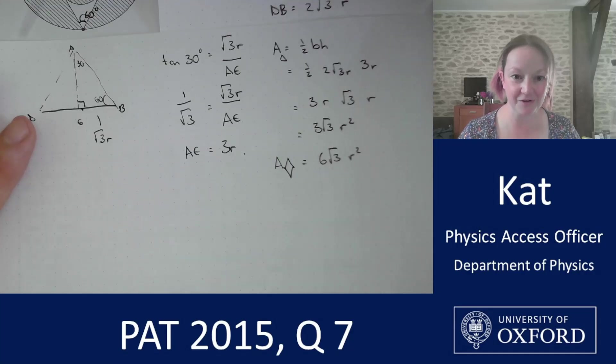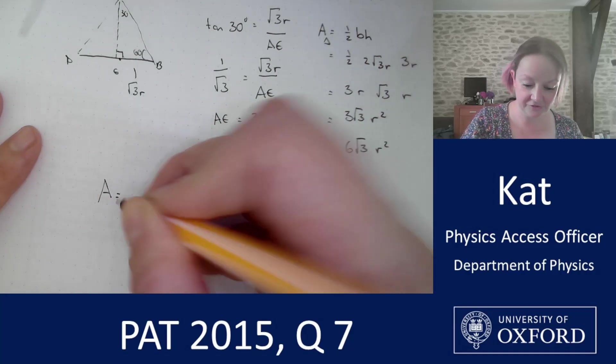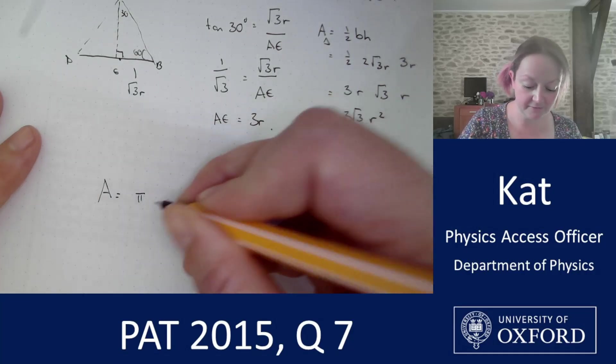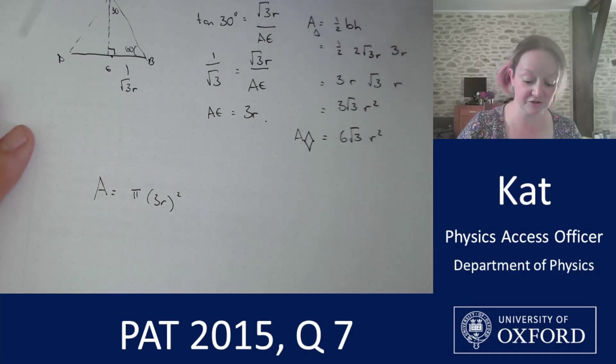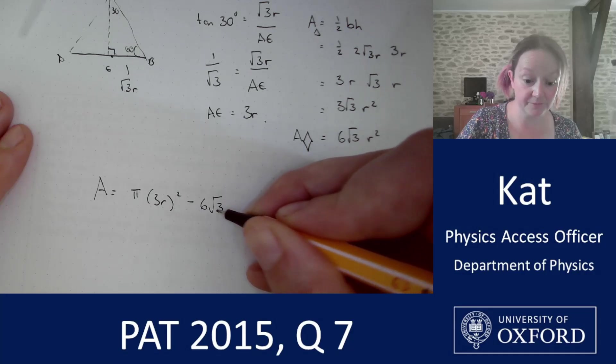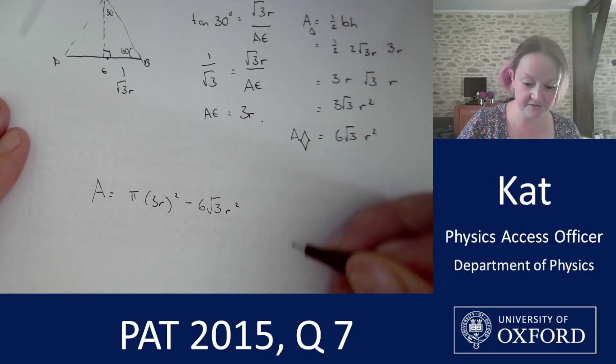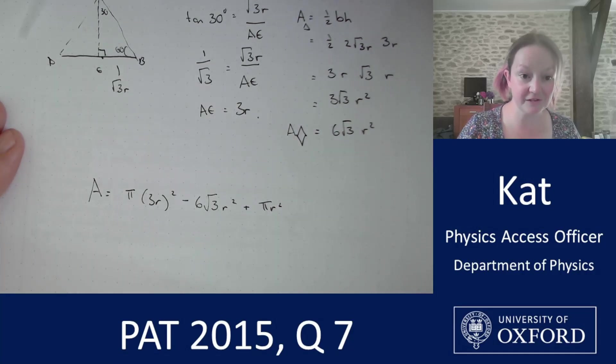I'm now at the point where I need to put it all together to work out the area of the shaded region. So that shaded region is my pi times 3R all squared for the big shaded circle. I'm going to take off 6 root 3R squared for the diamonds and then add back in pi R squared for the small circle.